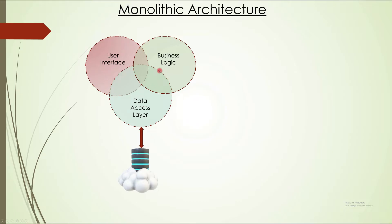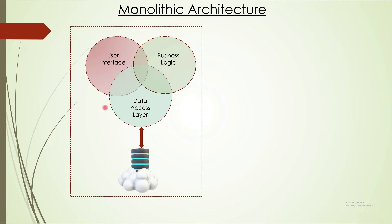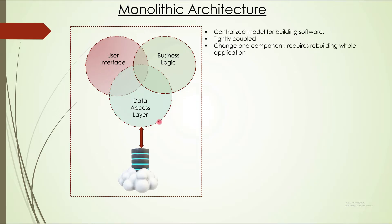One component is the user interface. The second one is business logic, where most of the coding is done. The data access layer is used to access the database or the persistence layer of that software. All these three or four components are tightly coupled and make one complete software — there is no loose coupling between the user interface, business logic, or data access layer. Monolithic architecture is an approach where the entire application is built as a single indivisible unit.